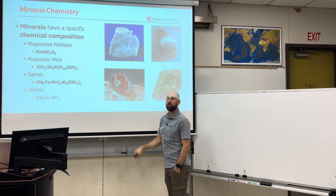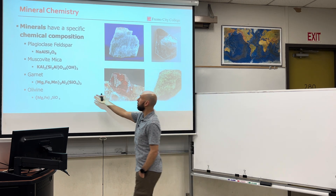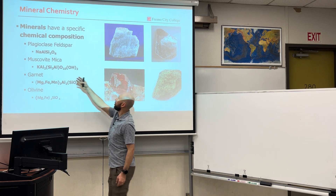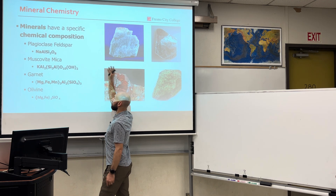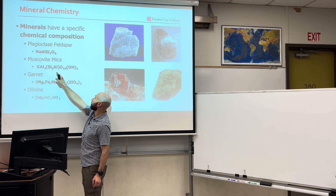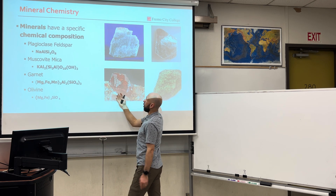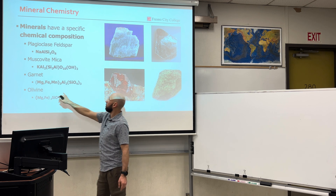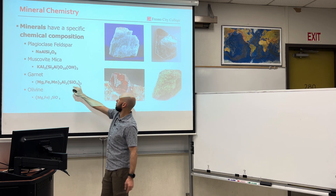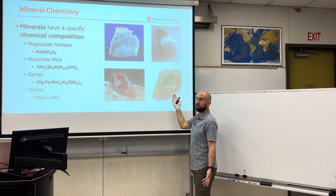Minerals have a chemical composition, meaning they have a chemical formula. Plagioclase feldspar contains sodium, aluminum, silicon, and oxygen. Muscovite contains potassium, aluminum, silicon or aluminum, oxygen, and hydroxide. Garnet could be magnesium, iron, manganese, aluminum, silicon, and oxygen. Olivine contains magnesium, iron, silicon, and oxygen.